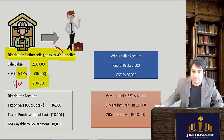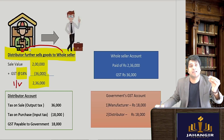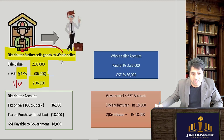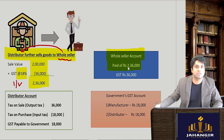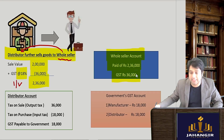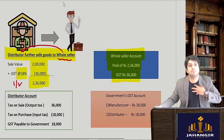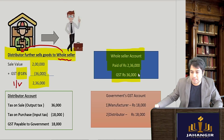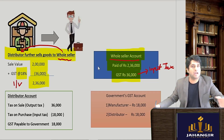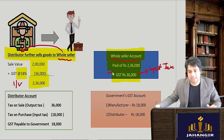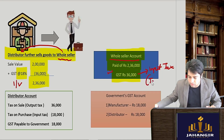The wholesaler pays 2,36,000 to the distributor. In the wholesaler's account, he has paid 2,36,000, of which 36,000 is GST. He has paid 36,000 on his purchases. This 36,000 in the wholesaler's account is counted as input tax — tax on his purchases. The wholesaler says: this is my tax on purchases.